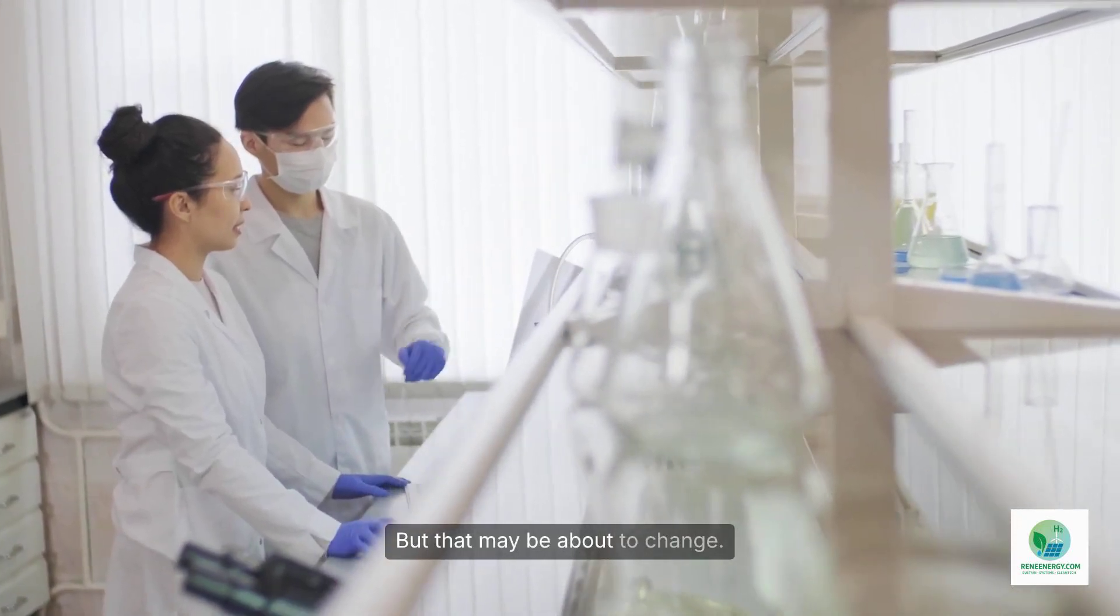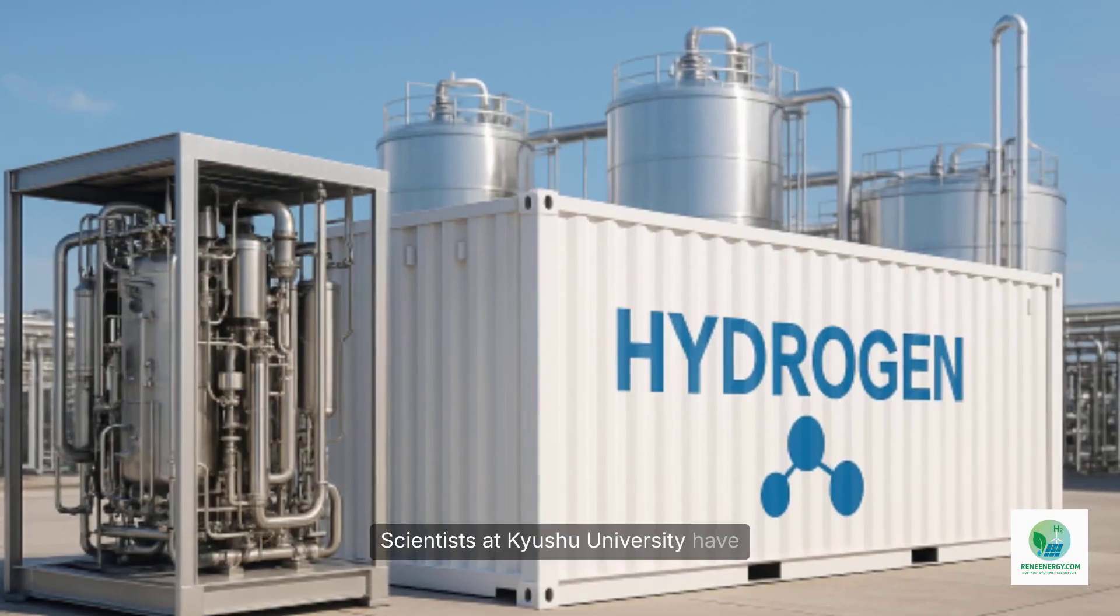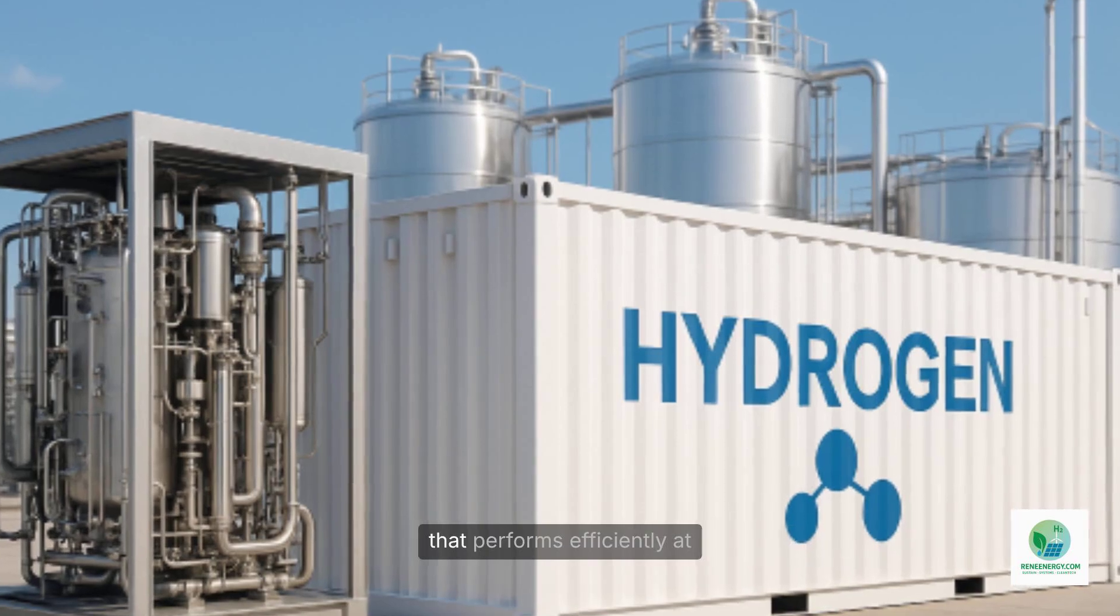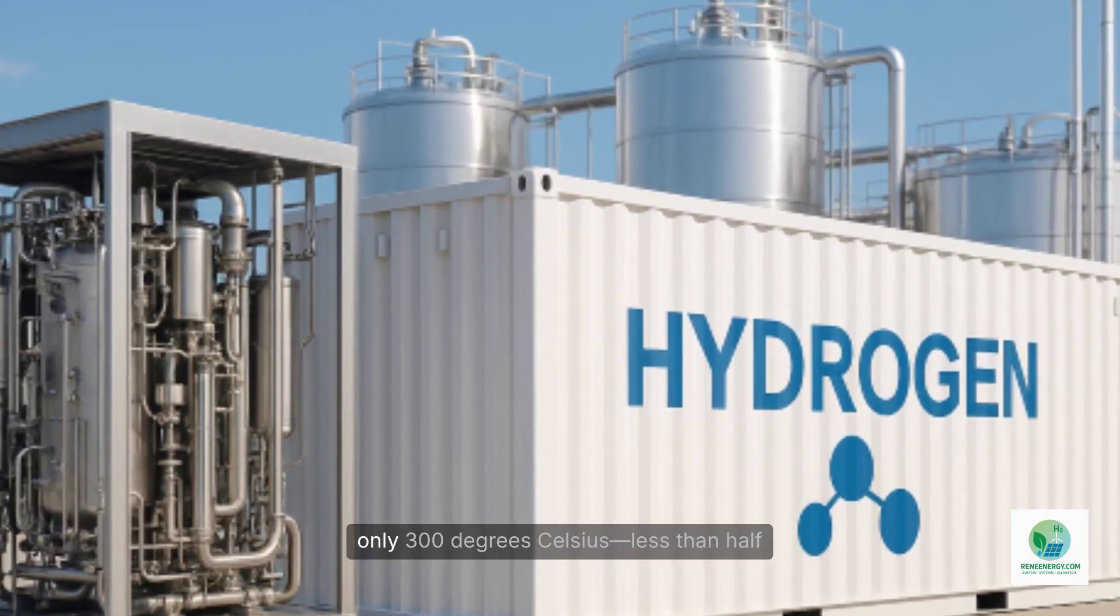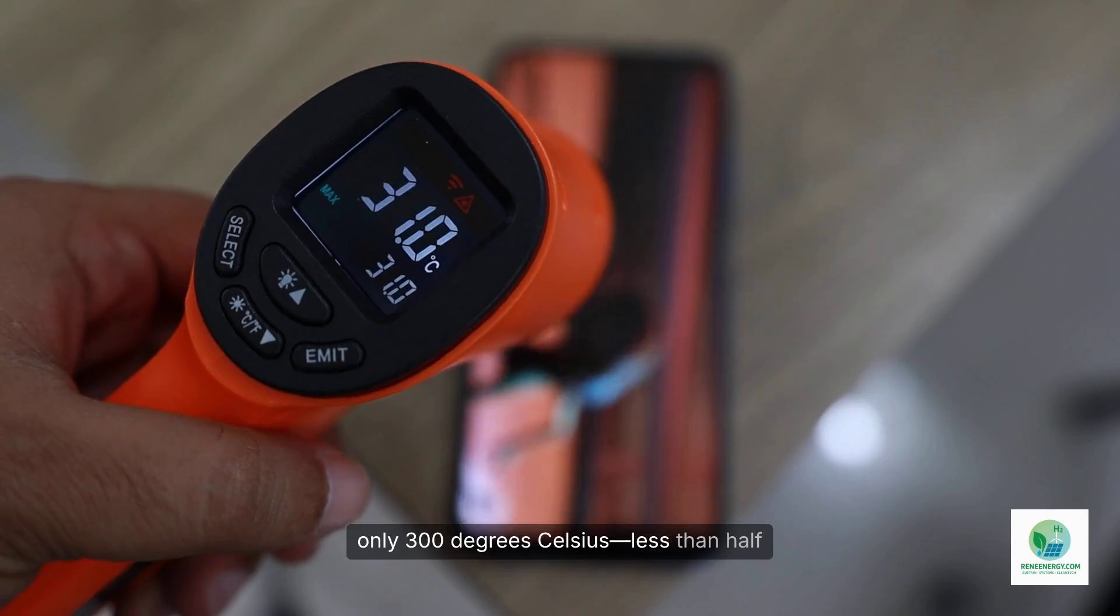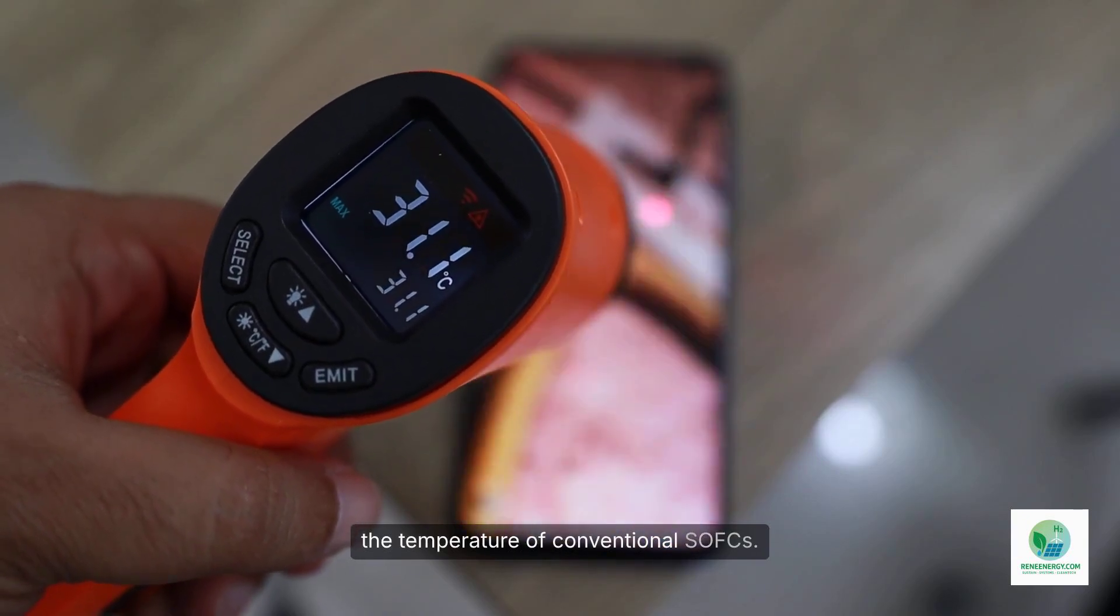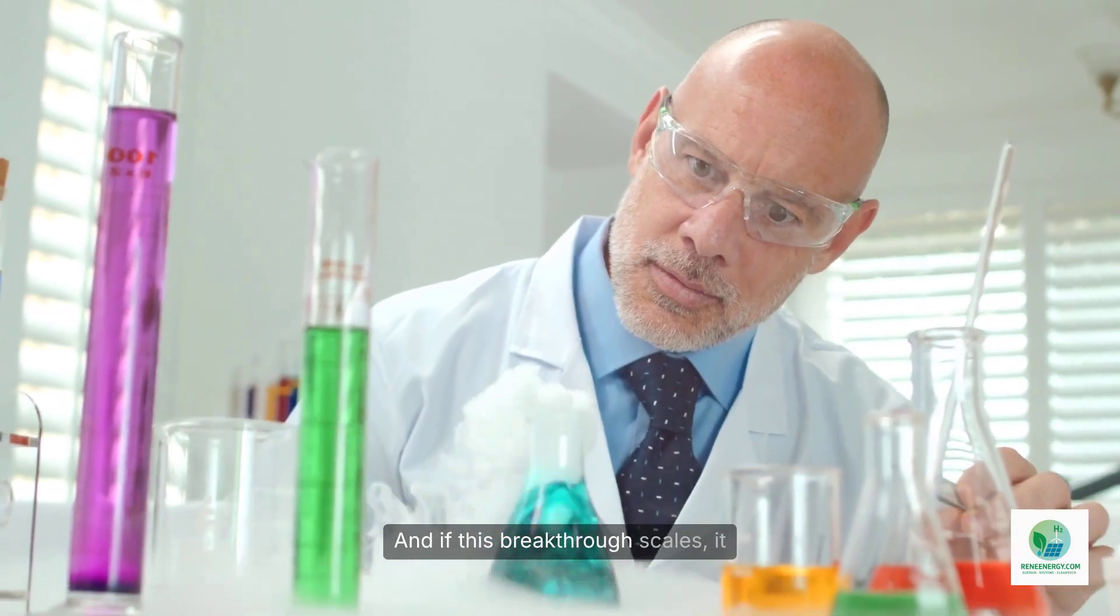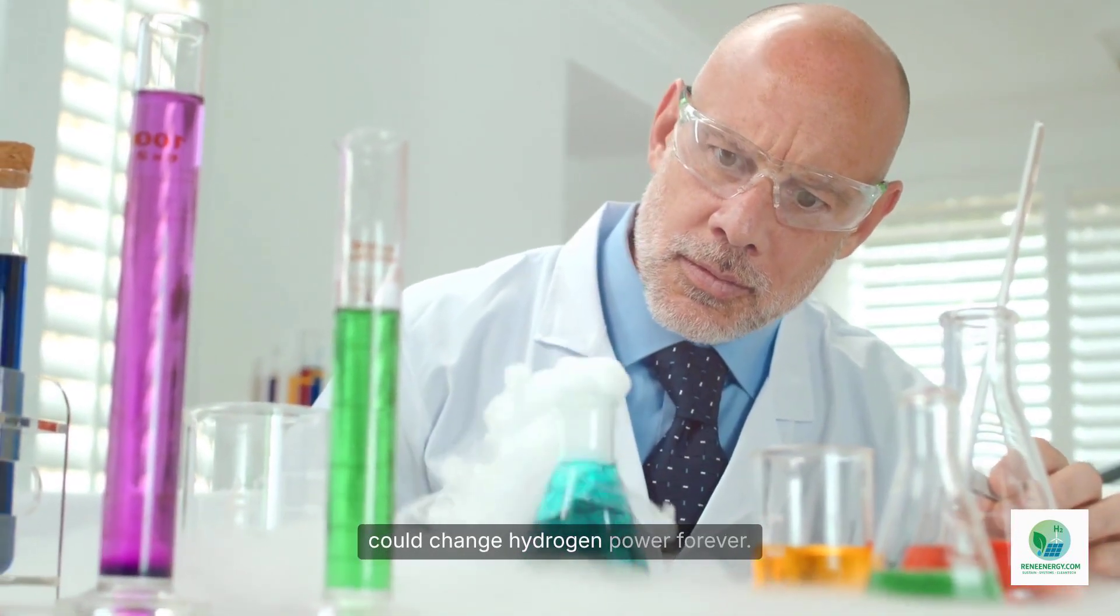But that may be about to change. Scientists at Kyushu University have demonstrated a new type of fuel cell material that performs efficiently at only 300 degrees Celsius, less than half the temperature of conventional SOFCs. And if this breakthrough scales, it could change hydrogen power forever.